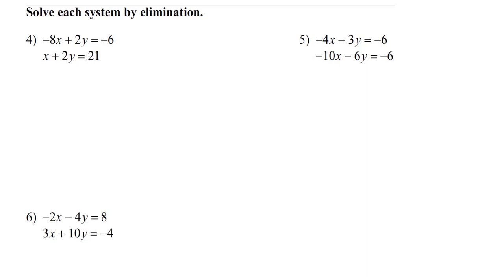Let's take a look at some elimination examples. In elimination, you want one set of variables — either the x's or the y's — to be the exact opposite of each other, meaning same number but different sign, so that when you combine the two equations together, that variable cancels itself out.